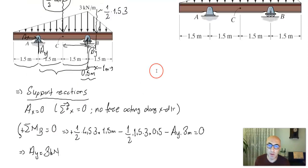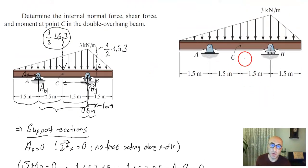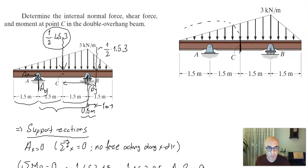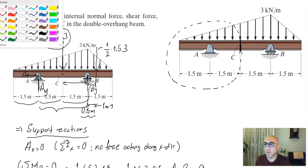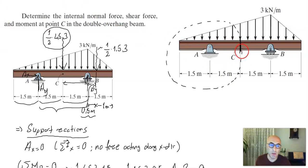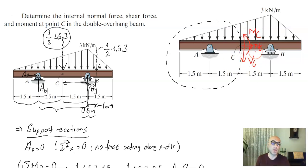Since the question asks for internal forces at point C, we do not need to find By. Instead, we apply a virtual cut at point C and use the left-hand side region to find the internal forces: the normal force NC, the shear force VC, and the bending moment MC.